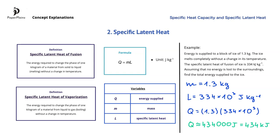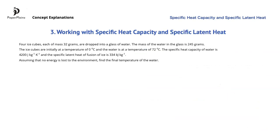So this is the total energy supplied to the ice block. Next, let's see how to work with specific heat capacity and specific latent heat together in a more complex example. Here, 4 ice cubes melt in a glass of water, and we have to calculate the final temperature of the water in the glass. Let's divide the situation into two parts: first, we will look at what happens as the ice melts, and then we'll consider changes that take place while the melted ice water and the water originally in the glass reach the same temperature. This common temperature will be the final temperature of the water in the glass.